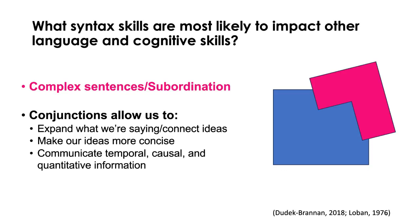When we use complex sentences, those conjunctions allow us to expand what we're saying and connect our ideas. They also allow us to make our ideas more concise — sometimes it's actually more sophisticated to say less. They allow us to communicate temporal, causal, and quantitative information. This is why a lot of kids who struggle with language and executive functioning, when you ask them a why question, don't give you the answer you'd expect. Part of that is because 'because' is a causal conjunction, and if you don't have a solid sense of syntax and don't know how to use it appropriately, it's going to be hard to organize your thoughts to answer the question.